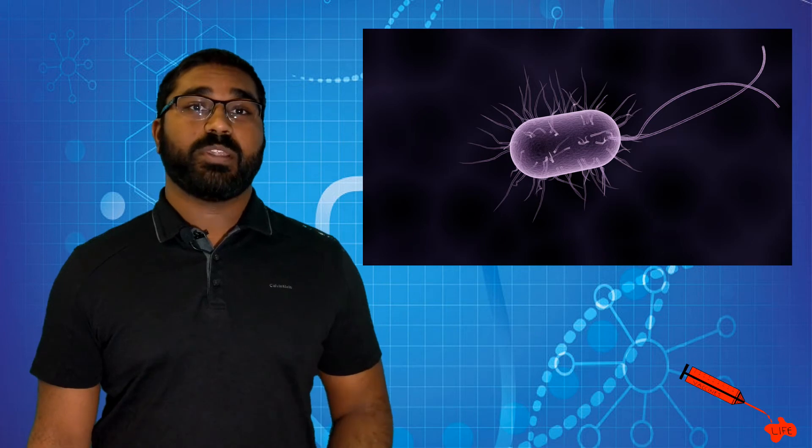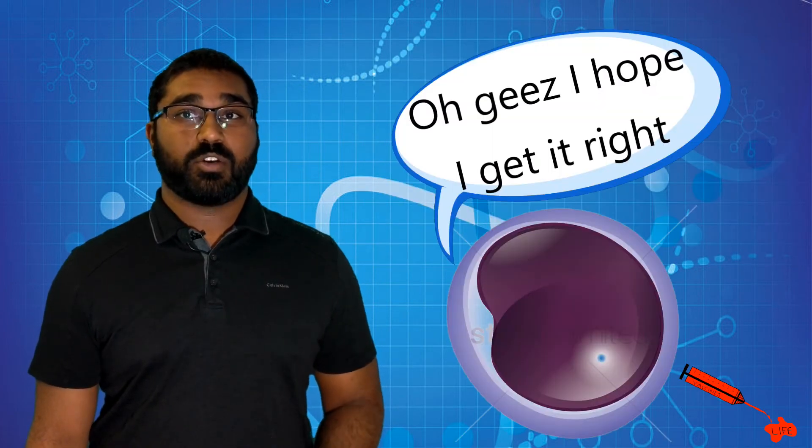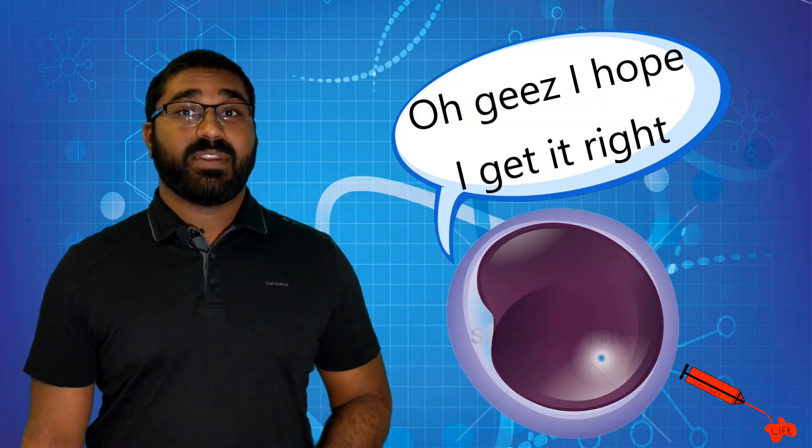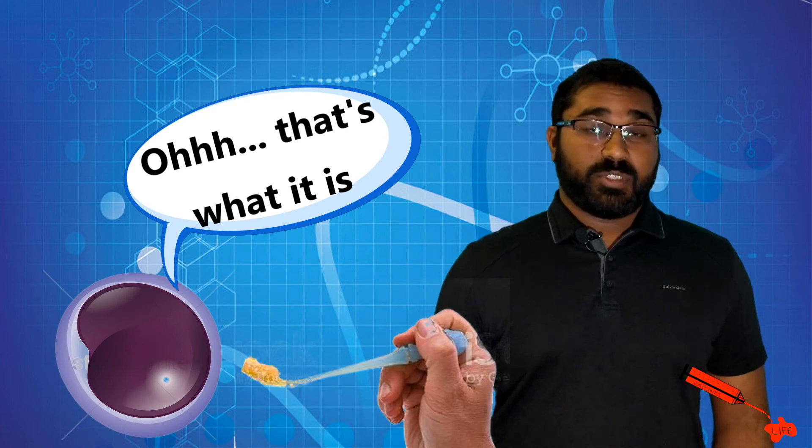So that's why this vaccine is so cool. Rather than just putting the whole pathogen into the syringe and injecting it into the person and hoping that your immune system decides to bind the correct epitope instead of an ineffective epitope, the scientists take the guesswork out of it for your immune system. Think of it like spoon-feeding the answers to your immune system.